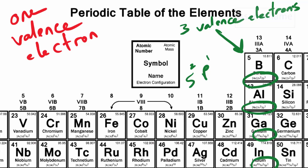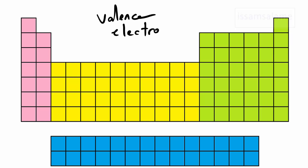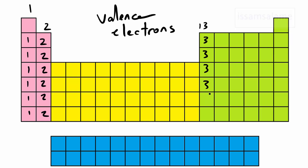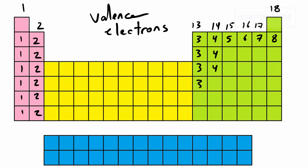To summarize what we have learned: according to the valence electrons in the following groups — group 1 has 1 valence electron, group 2 has 2, group 13 has 3, group 14 has 4, group 15 has 5, group 16 has 6, group 17 has 7, and group 18 has 8 valence electrons. We have a few exceptions like helium and hydrogen, which we're going to explain later when we talk about the octet rule.